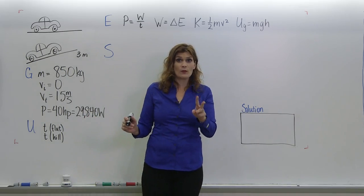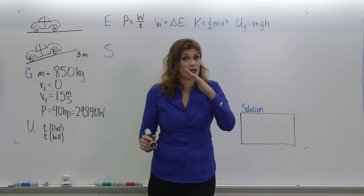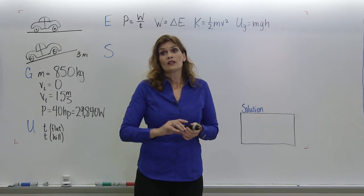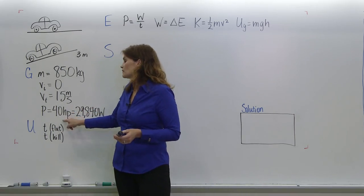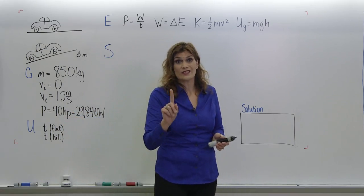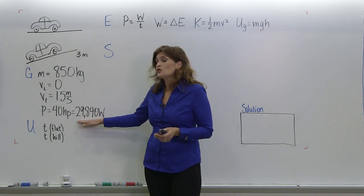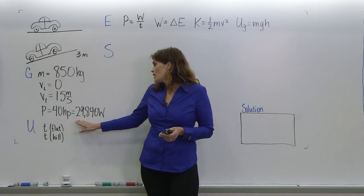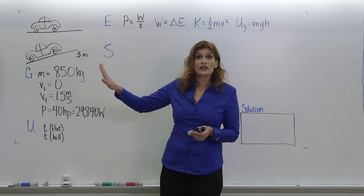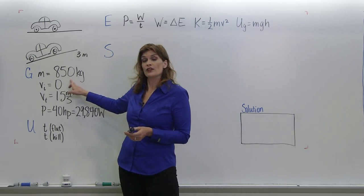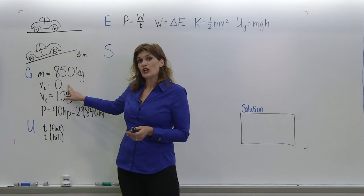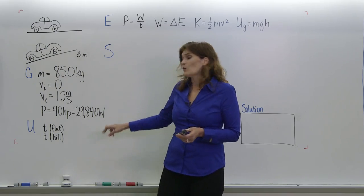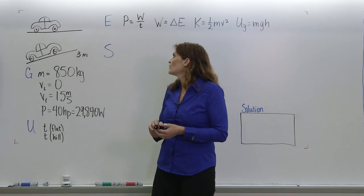The second part of the problem asks how long will it take if it's actually going up a hill of three meters during that time. So let's take our 40 horsepower—one horsepower is equal to 746 watts, so we went ahead and changed that to our MKS unit, and we've got all of our givens written down: 850 kilogram car, initial velocity of zero, final velocity of 15 meters per second, and we now have our power in a useful unit.